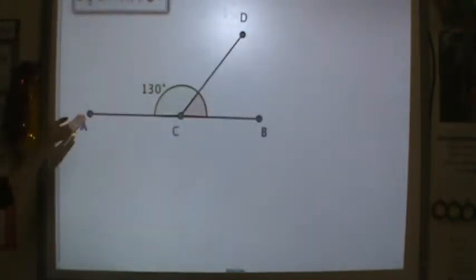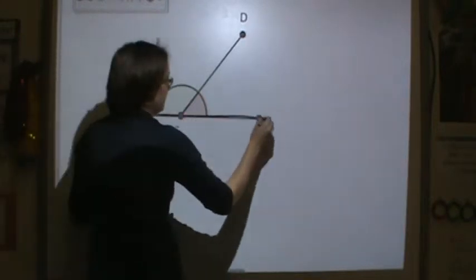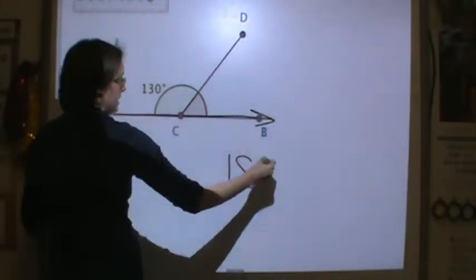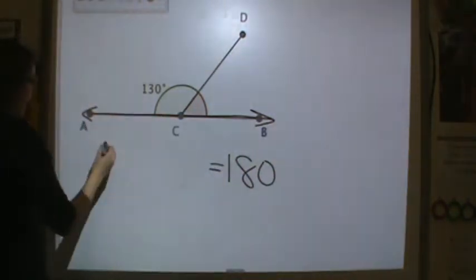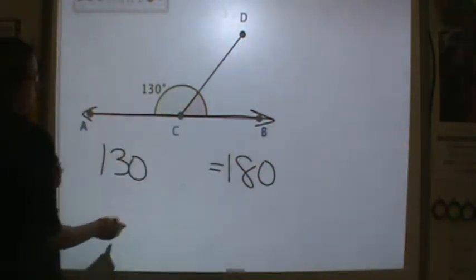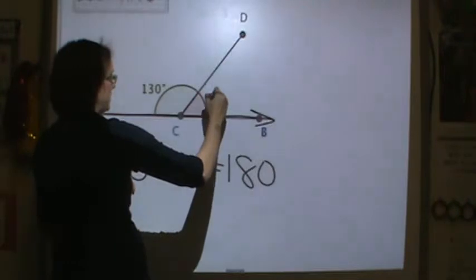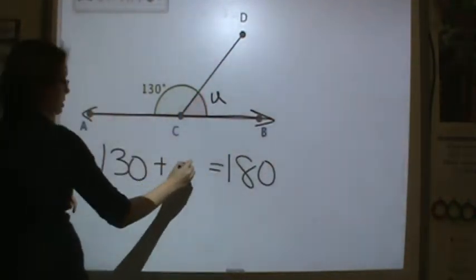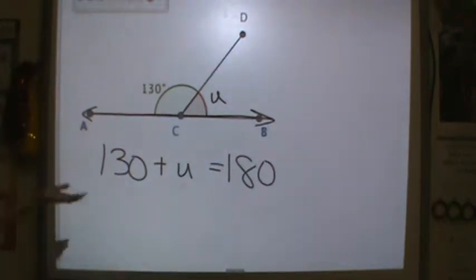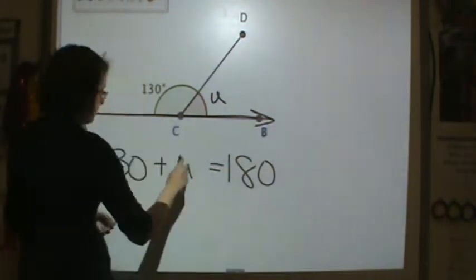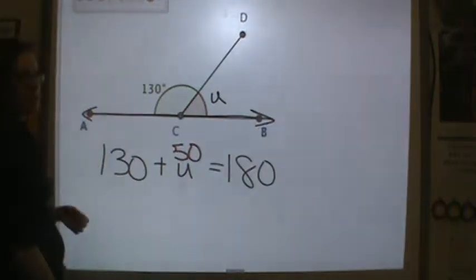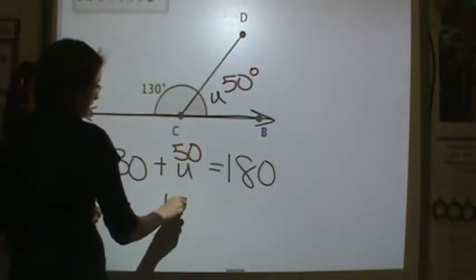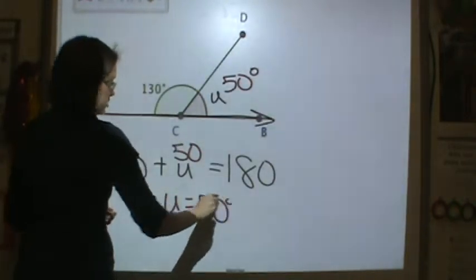Let's try this one. Again, we have another supplementary angle. So my total will be 180 degrees. I have 130 plus, let's make this a variable, let's make this U, the red portion U. So 130 plus U is equal to 180. Well, 130 plus 50 is 180. 50 would go right here. So U is equal to 50 degrees.